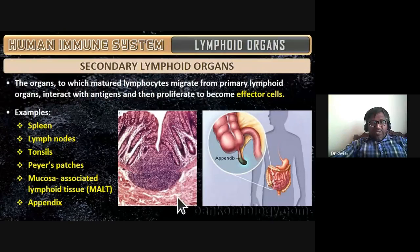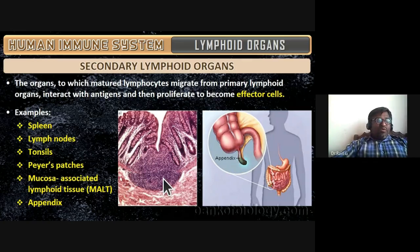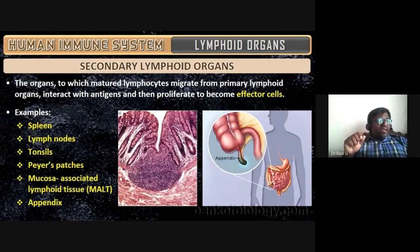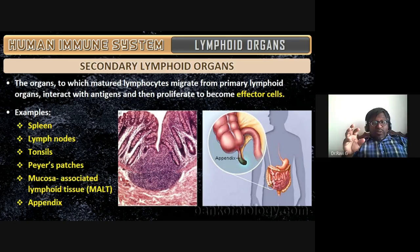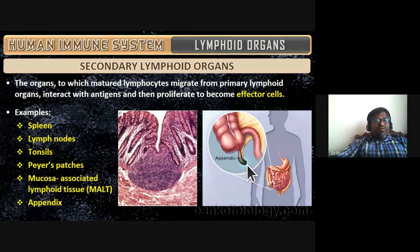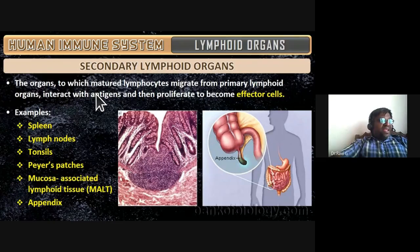Additional secondary lymphoid organs include MALT — mucosa-associated lymphoid tissue — which is the lymphoid tissue associated with the mucus layer. In the intestine, the mucosa is the innermost layer. Appendix is also an example of a secondary lymphoid organ. In these secondary lymphoid organs, lymphocytes migrate, interact with antigens, and proliferate to become effector cells.